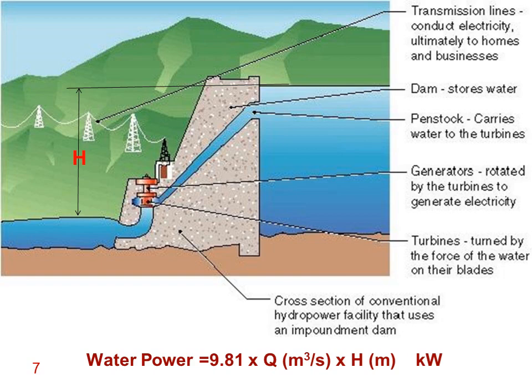The difference in water level between upstream and downstream is called H in meters, and the flow rate through the water channel inside the dam is called Q in cubic meters per second. If you multiply by rho times g — where rho for clear water is 1000 kg/m³ and g is 9.81 m/s² — and divide by 1000, it gives you the water power in kilowatts.